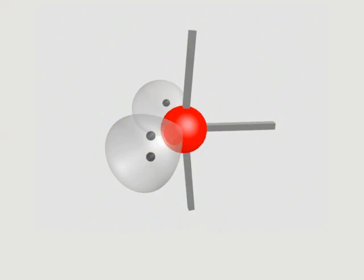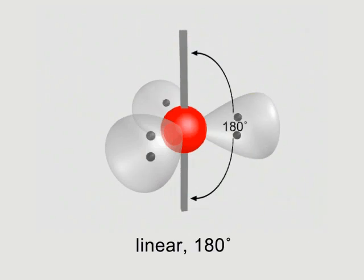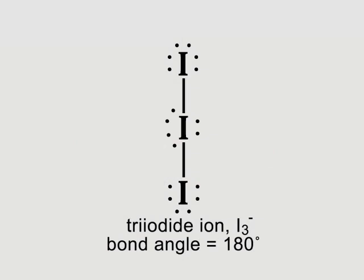The final shape in the trigonal bipyramidal arrangement occurs when a third equatorial lone pair repels the axial groups to 180 degrees. The object has a linear shape as in the case of the triiodide ion.